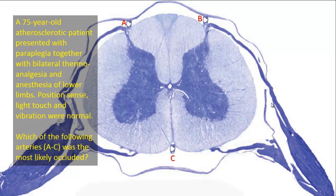A 75-year-old atherosclerotic patient presented with paraplegia together with bilateral thermoanalgesia and anesthesia of the lower limbs. Position sense, light touch, and vibration were normal. Which of the following arteries A to C was most likely occluded?